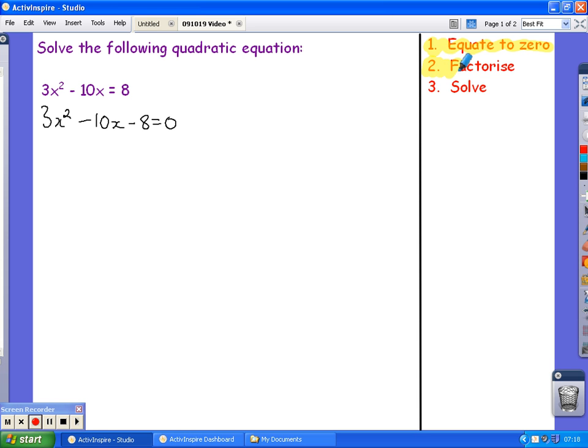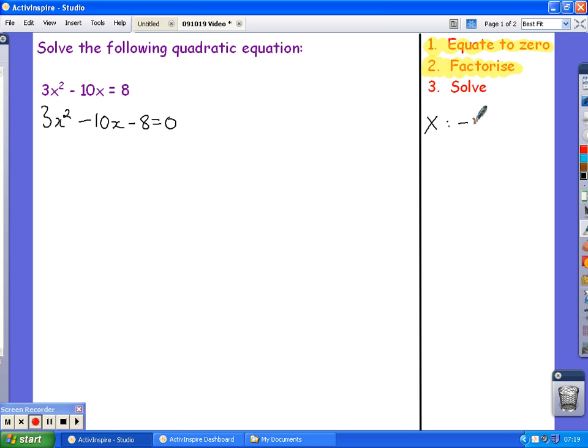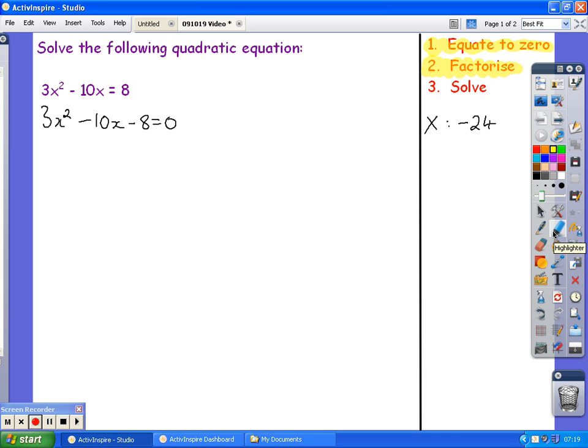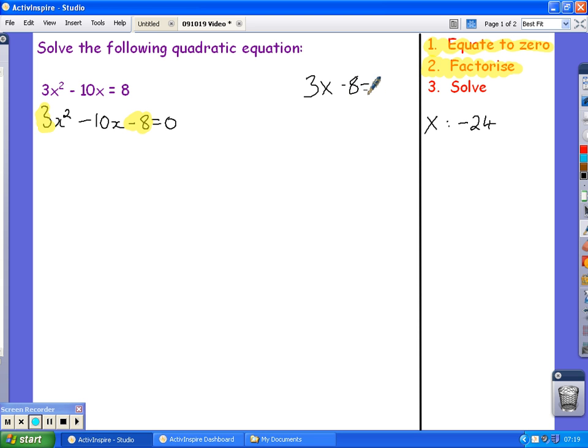Now comes the hard part. I need to factorise. I'm going to look for two numbers which multiply to give negative 24. Where does that negative 24 come from? Well, you've got a coefficient of x squared, which is 3, and you've got a constant term of negative 8. I multiply those two together, and that gives me negative 24. That's why I need two numbers which multiply to give negative 24.